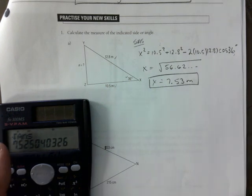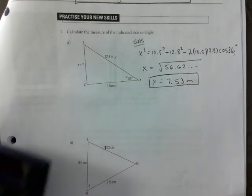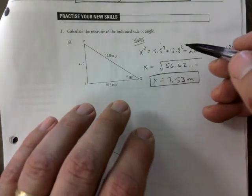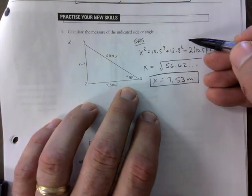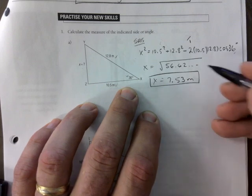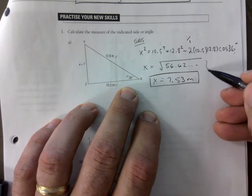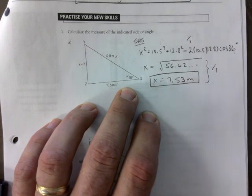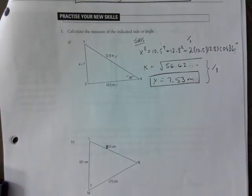So you take the root of that and you get 7.53, and we are meters. Okay, so that's your answer, we're good? Units, everything, so I would give you, as soon as I see that you're using cosine law, that's the right choice, in this case that's one. And I would give you another mark for the work. Two marks.